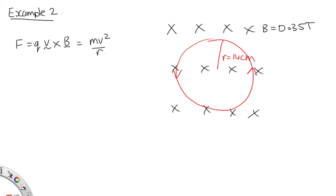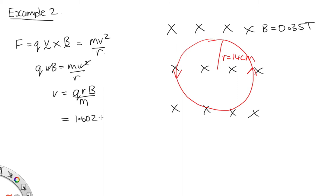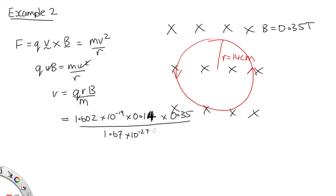Since the velocity and the magnetic field are always at right angles, we can effectively ignore the cross product, giving QVB = mv²/r. The Vs cancel out, so V = QRB/M. Substituting in: charge on proton = 1.602 × 10⁻¹⁹ C, radius = 0.14 m, field = 0.35 T, mass of proton = 1.67 × 10⁻²⁷ kg. Solving gives a speed of 4.70 × 10⁶ m/s.